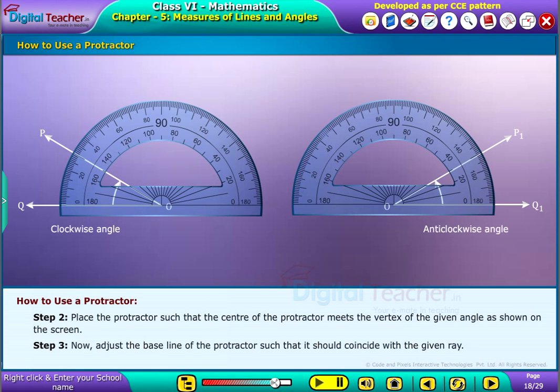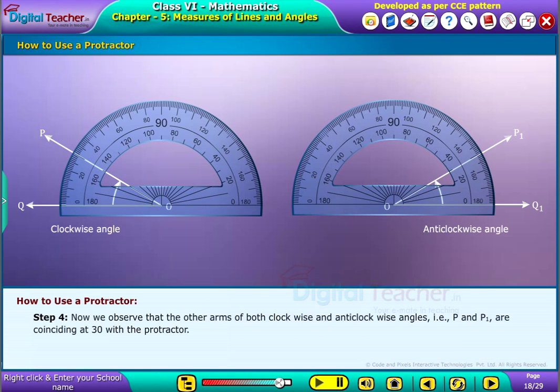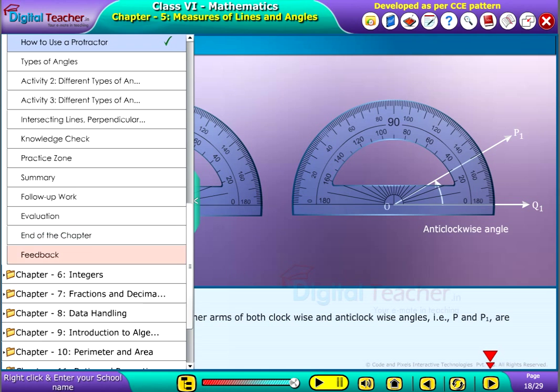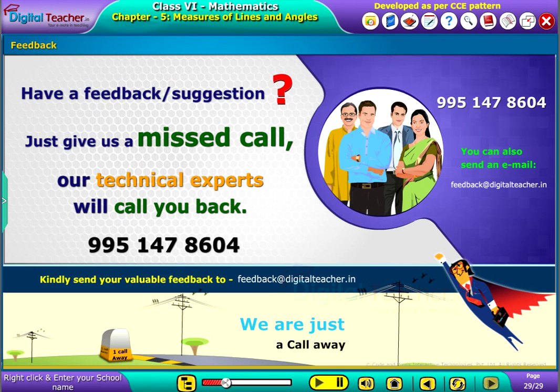Step 4: Now we observe that the other arms of both clockwise and anticlockwise angles, that is P and P1, are coinciding at 30 degrees with the protractor.